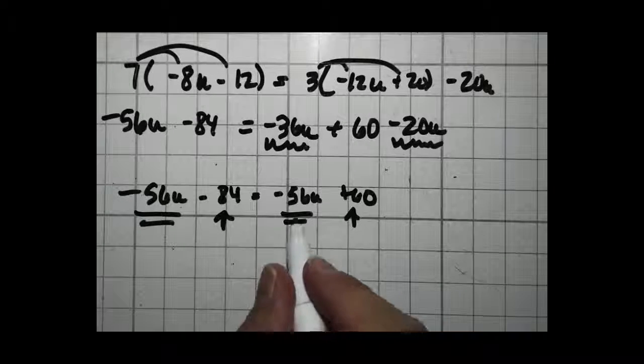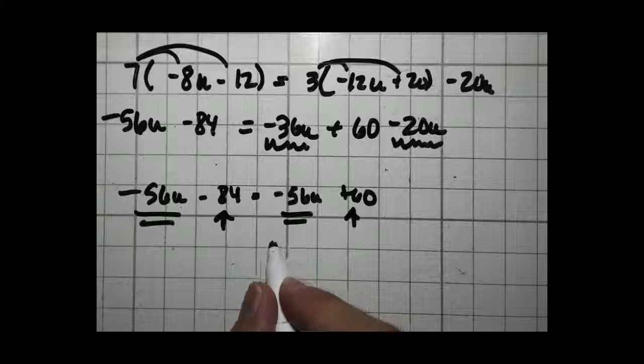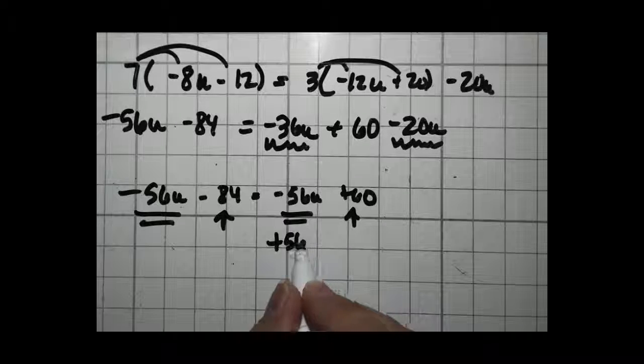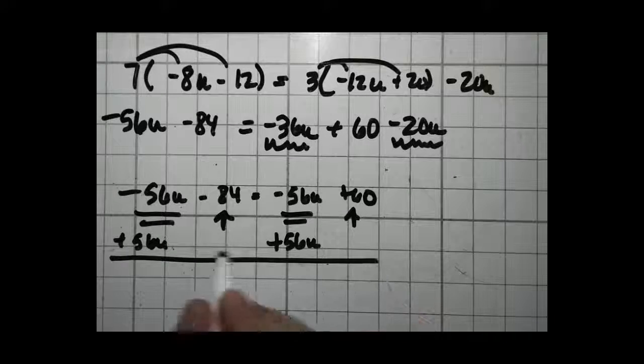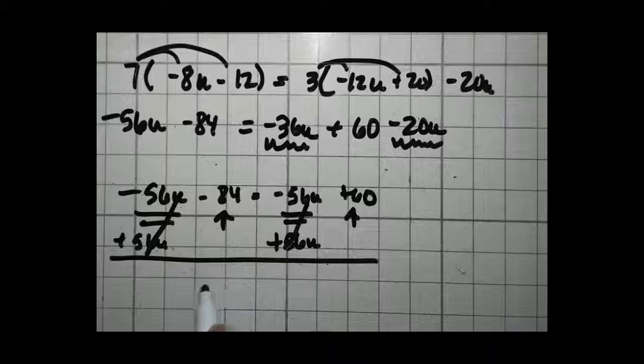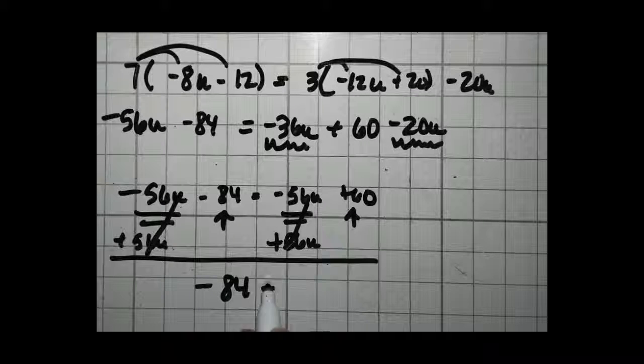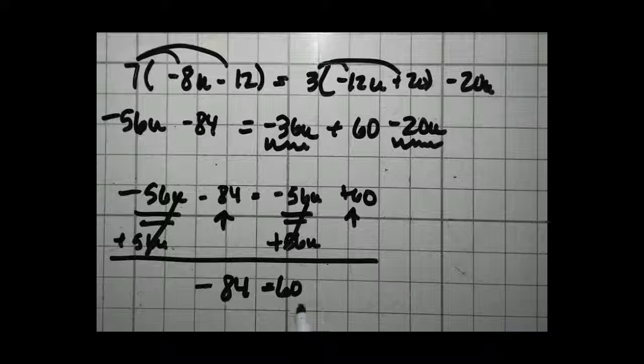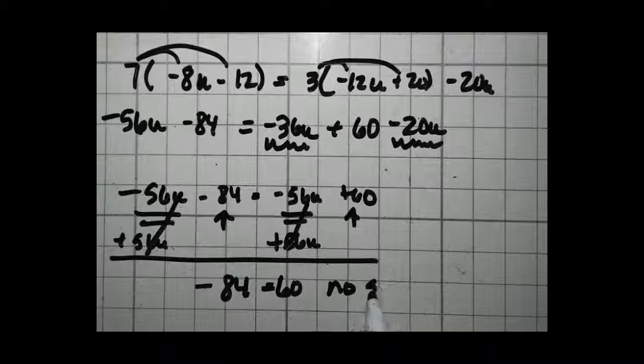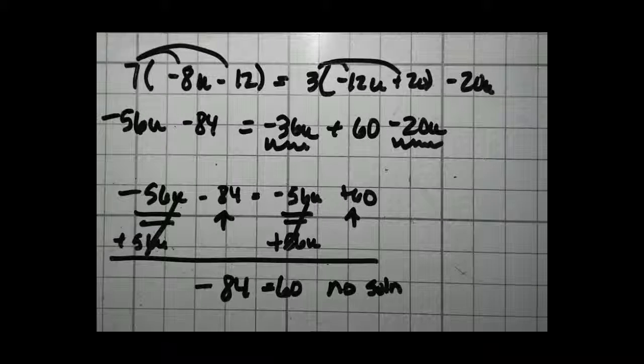Let's go ahead and work it out and prove that we're right. In order to get all the variables on one side, we're going to add 56u to both sides. When we add 56u to both sides, this goes away, this goes away. And you get negative 84 equals 60. As we said earlier, when you have something like that, you know that's impossible. So there's no solution to this problem.